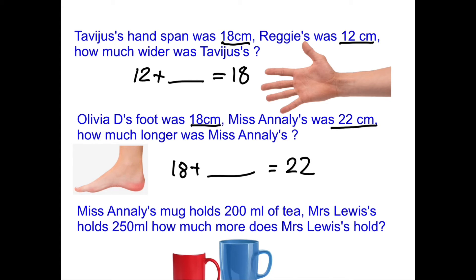You could do a take away — you could do 22 take away 18, or 18 take away 12. But it's easier to count up to the next number because they're quite close: 18 and 22. The last one: Miss Annelise's mug holds 200 millilitres of tea and Mrs Lewis's holds 250. How much more does Mrs Lewis's hold? So that's the difference — what do you have to add to 200 to get 250? And that will tell you the difference.